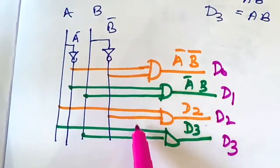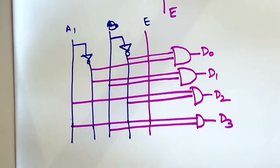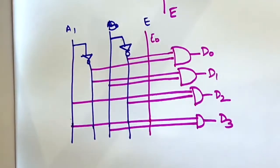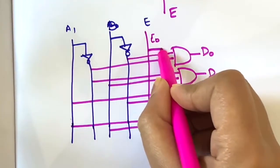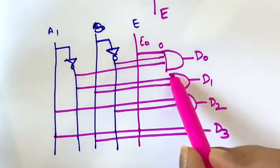Now if we put one enable line, what will happen? Let's check. So now we will see how it works when E equal to 0. For the AND gate, these are the AND gates. If you have not seen how the AND gates operate, please go and check my logic gates video.